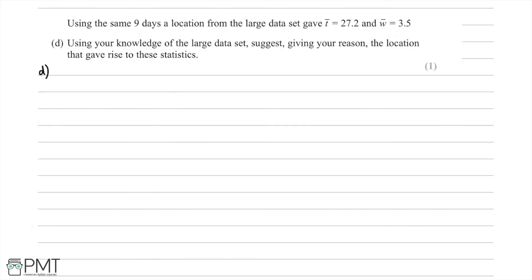In part (d), using the same nine days, a location from the large data set gave T̄ = 27.2 and W̄ = 3.5. We're asked to suggest which location could give rise to these statistics. Considering the large data set, which contains various UK locations and three worldwide locations, a temperature of 27.2°C is too high for UK locations in July, where temperatures range from around 13 to 19 degrees, so we can exclude the UK.